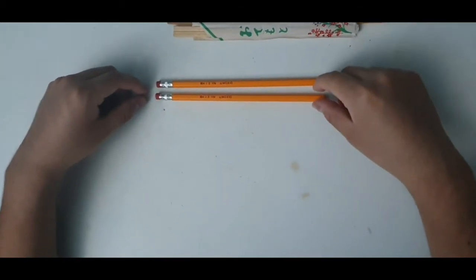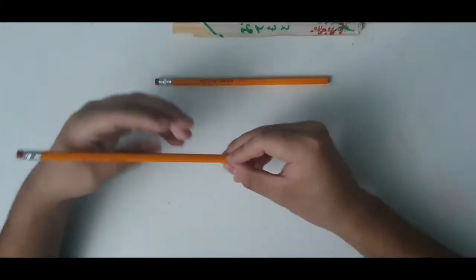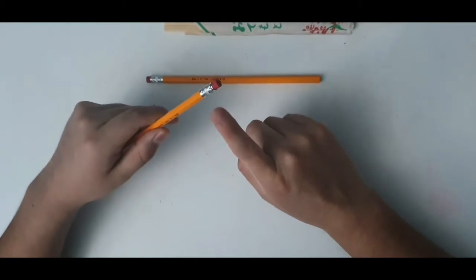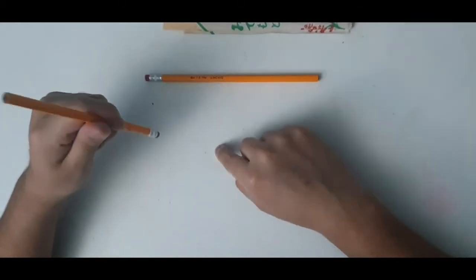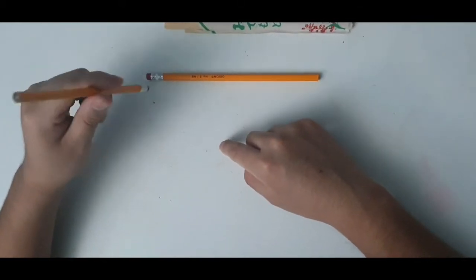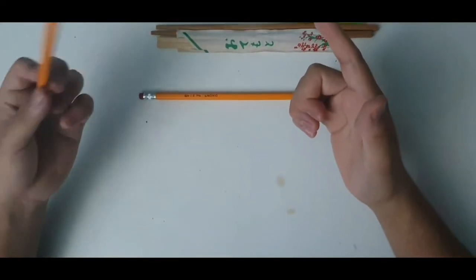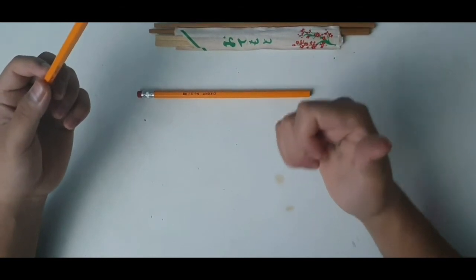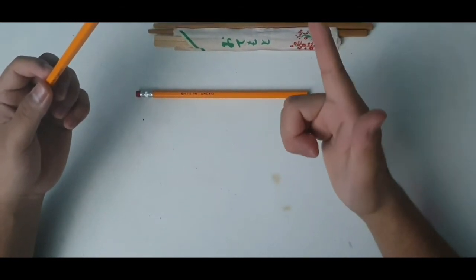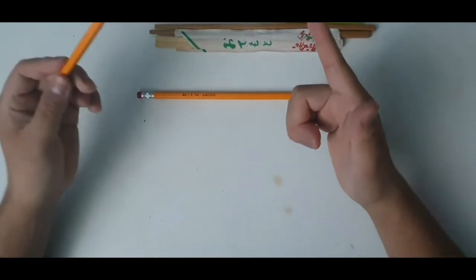Now that you have your pencils in front of you, you want to grab one of them and make sure that the eraser is pointing downward, not upward. The very first step is you want to make sure that the pencil is placed between your thumb and your pointer finger, and it should look something like this.